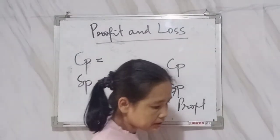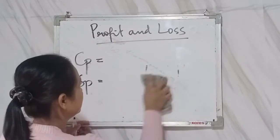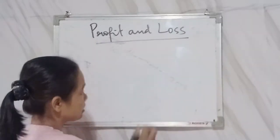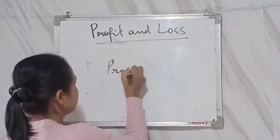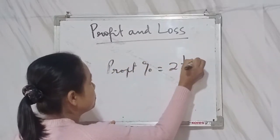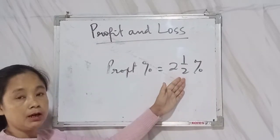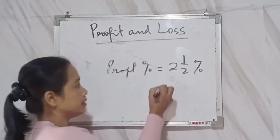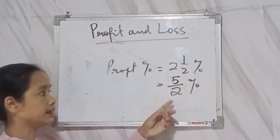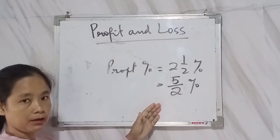Suppose the profit percent is given as a mixed fraction, like 2 and one-half percent. You must convert it into an improper fraction first — it becomes five-by-two percent. You will then solve it using the formula.